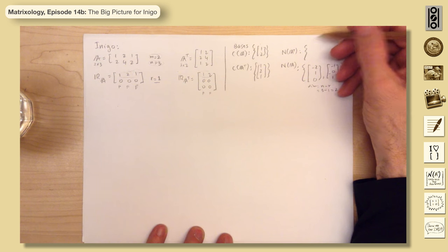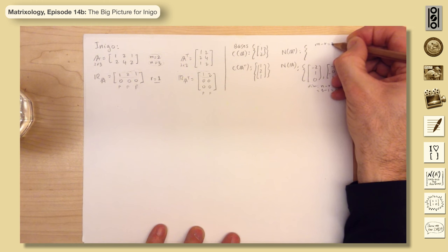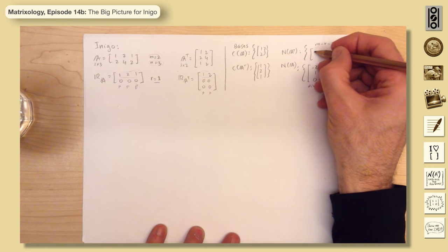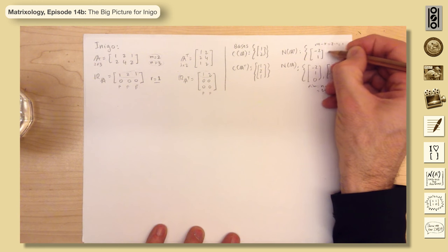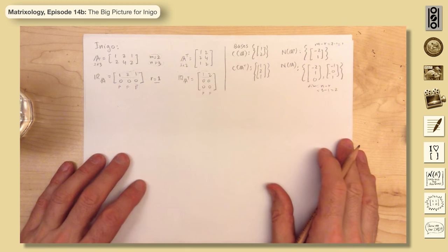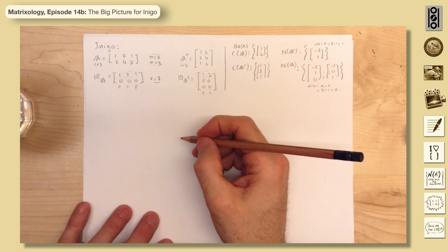This dimension will be M minus R, which is two minus one, which equals one. And in fact, that's what we get. So we just have minus two and one. So let's just sketch that one out again quickly. I think that's all we're going to do here.